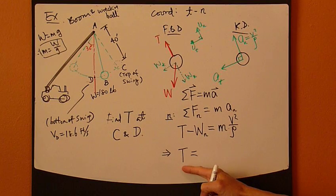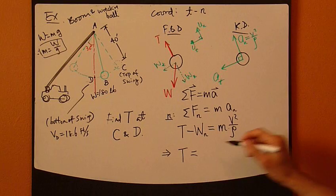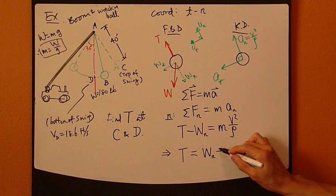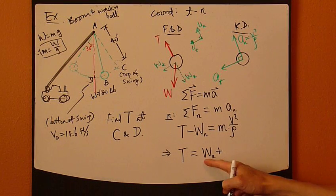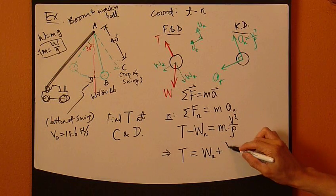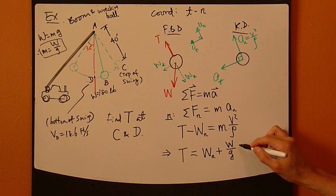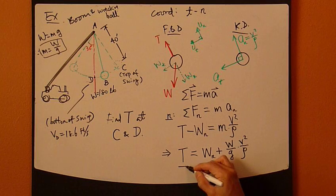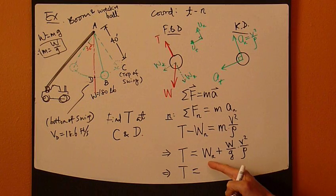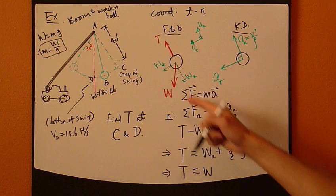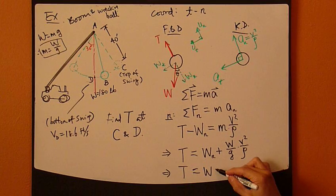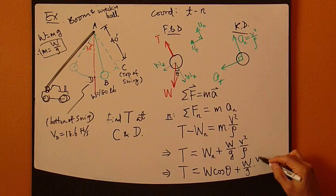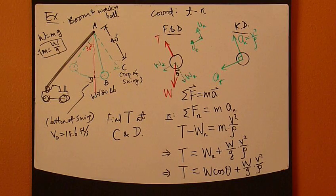So, T, that's the unknown. Keep it on the left-hand side. Move everything out to the right-hand side. So, that's Wn. Plus, now, mass can convert it to weight. Which is W divided by G times V squared over rho. So, keep going. T equals Wn is W, what is this? Let's call angle theta. So, W cosine theta plus W over G times V squared over rho.